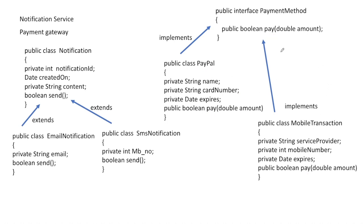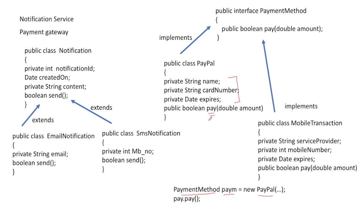From the main class, we create an object of the PaymentMethod interface and pass either a PayPal or MobileTransactions instance. If using PayPal, we create a PayPal object with the required information and call the pay() method. If using MobileTransactions, we create that instance and call its pay() method. This is how our payment and notification services should be designed — and these are all the entities involved in designing an airline booking system.